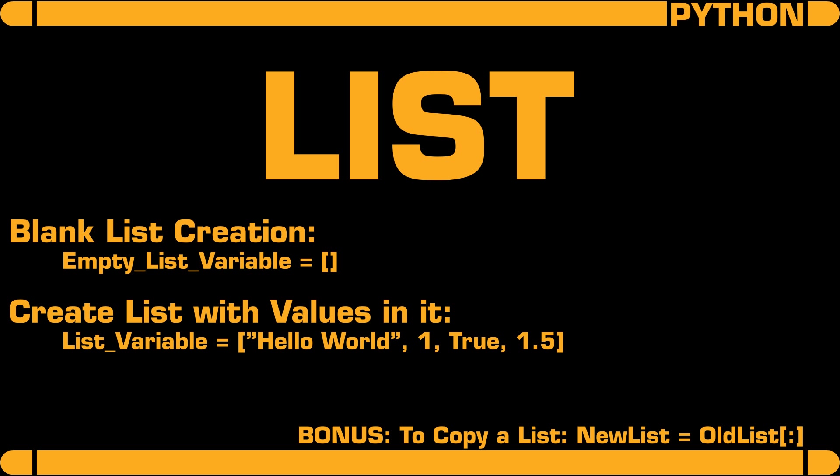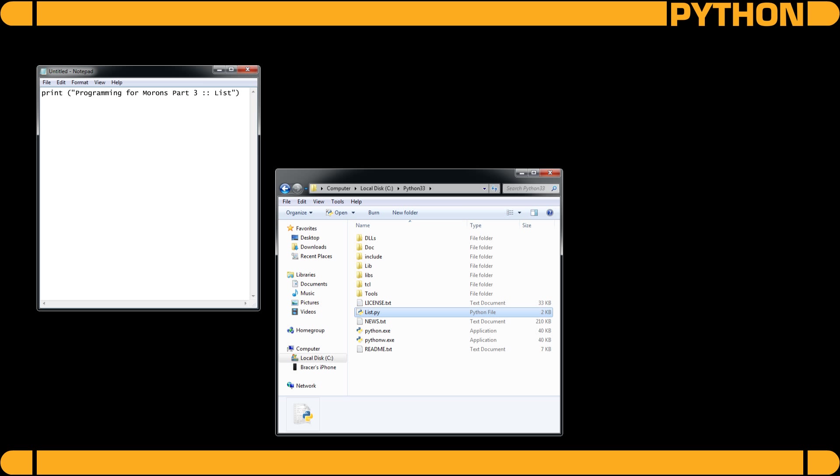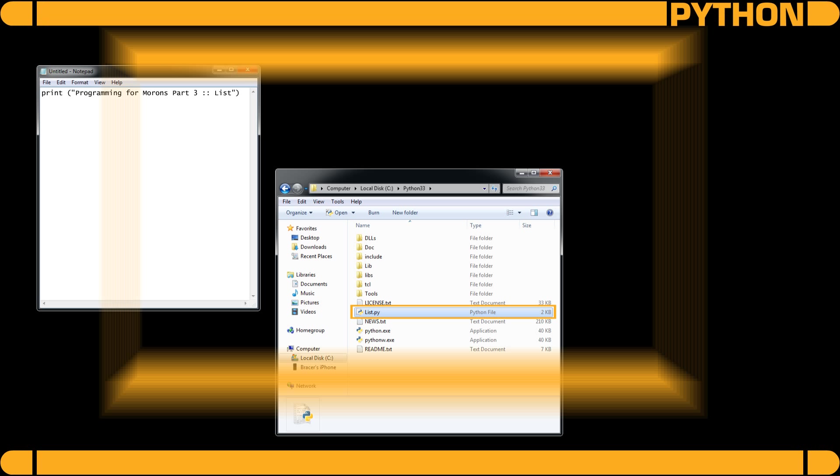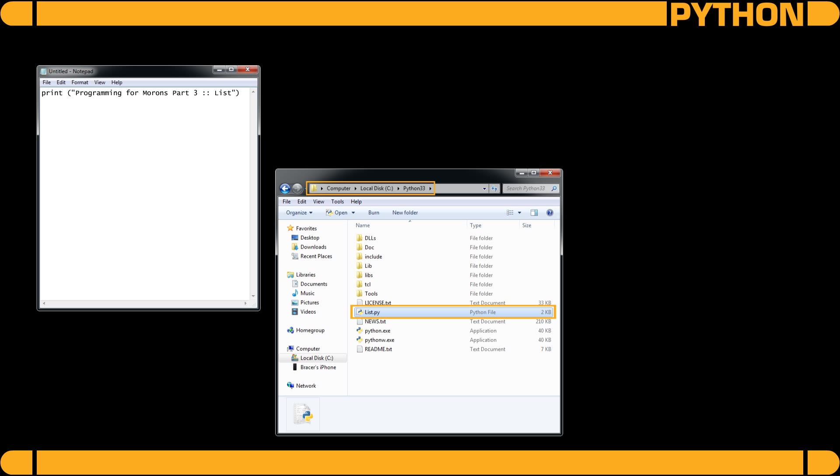Before we get to the fun part where you get to see visually how a list works, you will have to do the following boring stuff first so that you may follow along. First, open Notepad, type in this line of code, and save it in your Python root folder as list.py. In my case, it is this. Yours will probably be of a higher version number. Just save it in your respective folder.